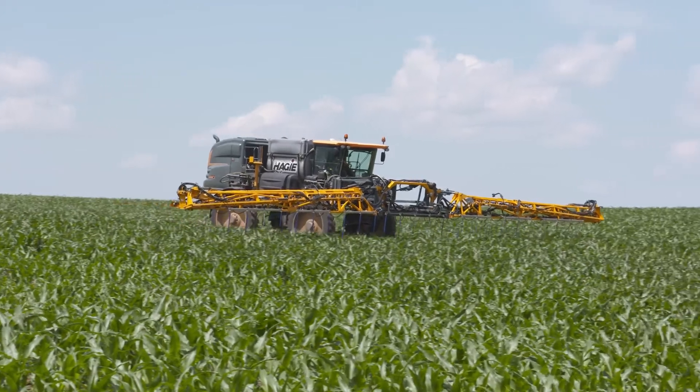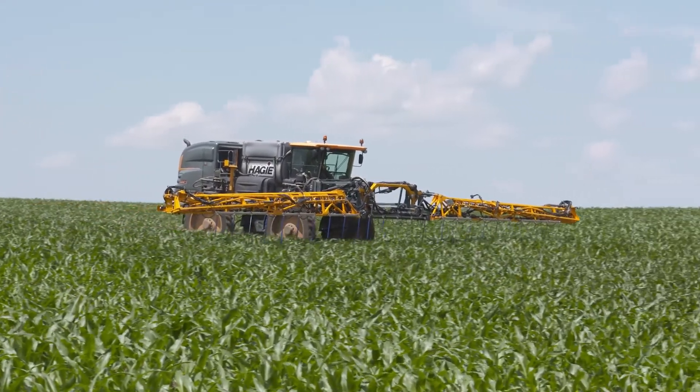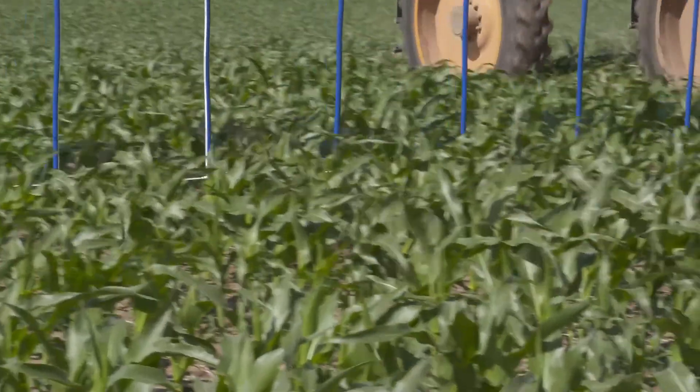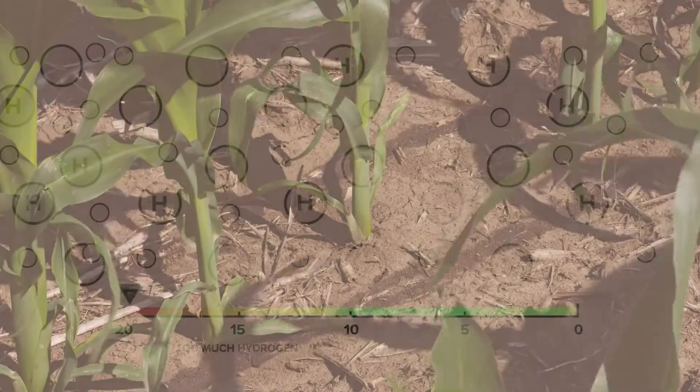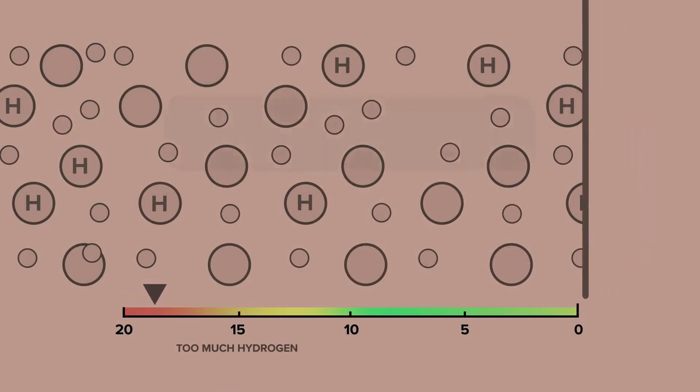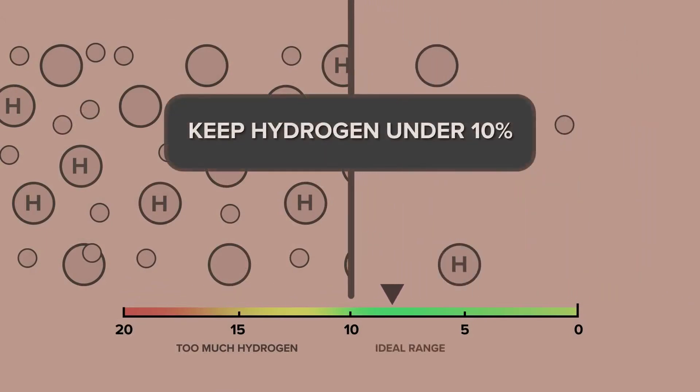In most soils, we want to have a little bit of hydrogen. However, if we get too much, our pH drops so low that it's going to have negative effects on nutrient availability for the crop — specifically those micronutrients. That's going to cause the farmer to spend extra fertilizer dollars on those micronutrients or other limiting nutrients. So we want to keep that level less than 10% to ensure the best nutrient uptake.